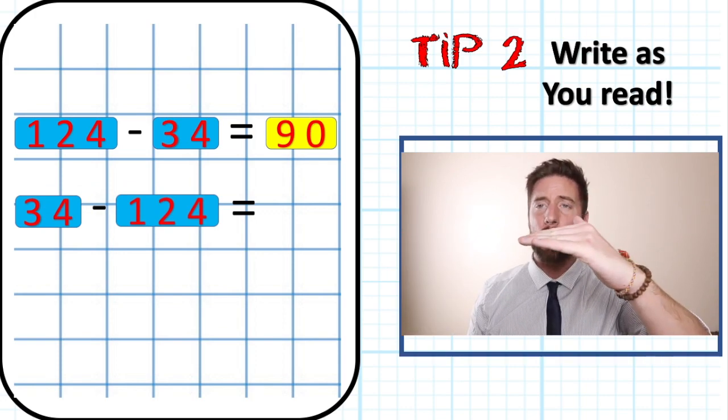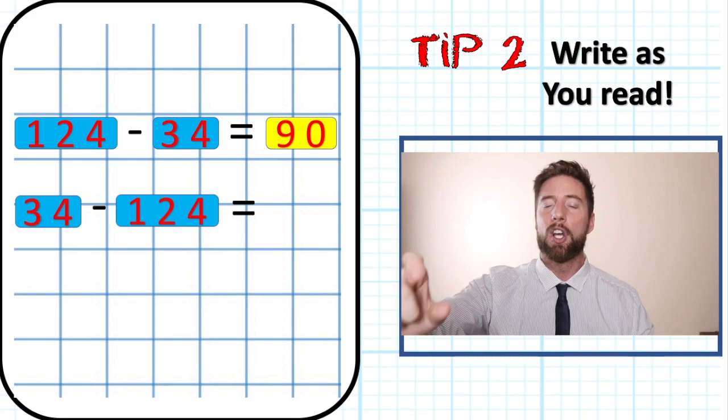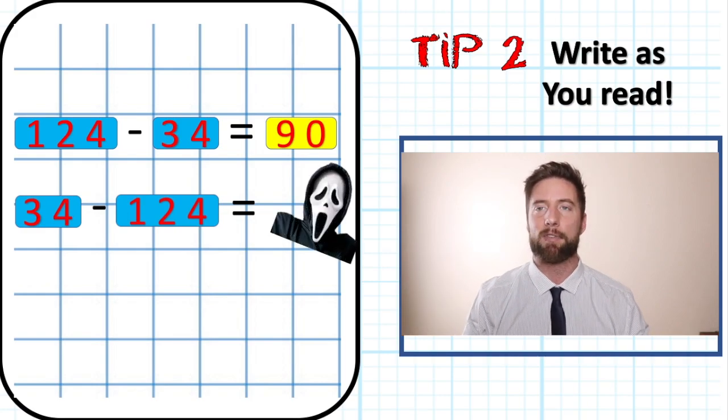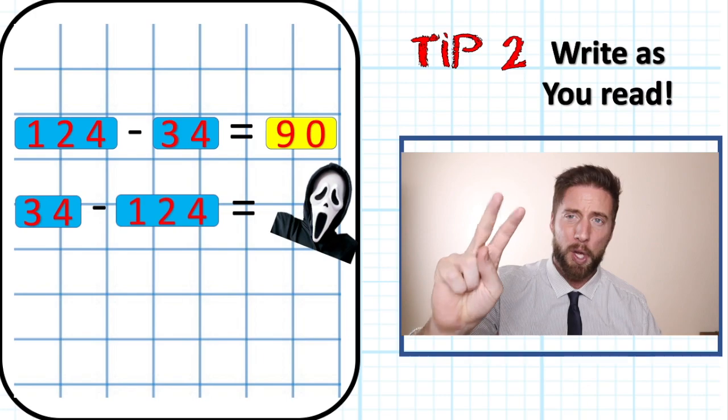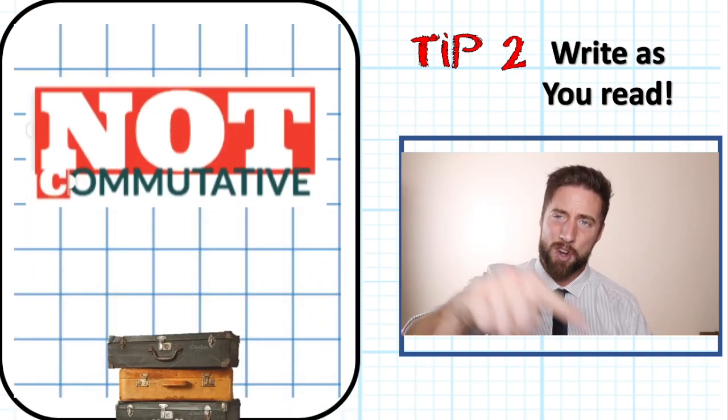you can't just put the bigger number on the top. You have to write 34 subtract 124, knowing we are going to get into negative numbers. Okay, so tip number two: write it as you read it.